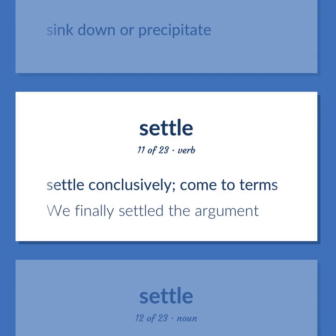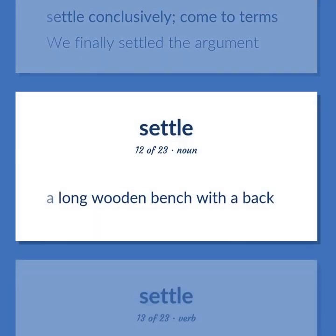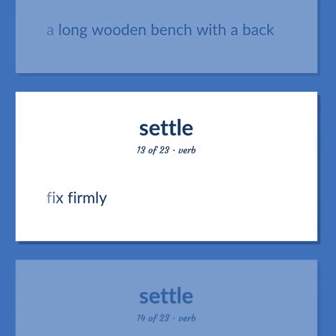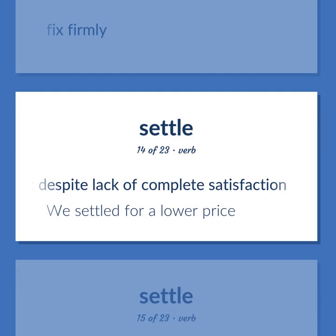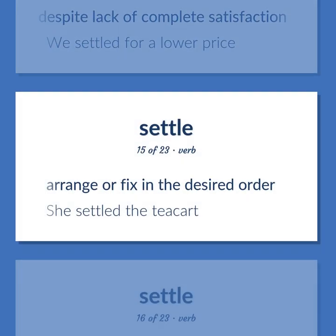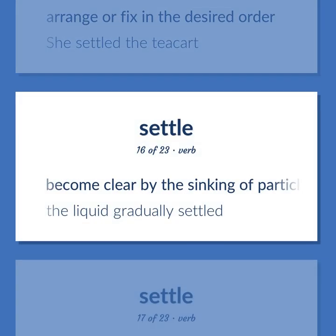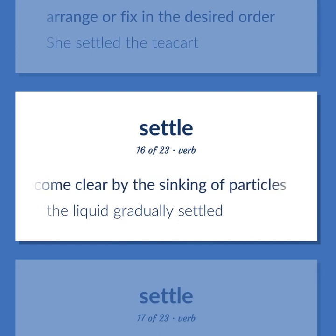Settle: settle conclusively, come to terms — we finally settled the argument. A long wooden bench with a back. Fix firmly. Accept despite lack of complete satisfaction — we settled for a lower price. Arrange or fix in the desired order — she settled the tea cart. Become clear by the sinking of particles — the liquid gradually settled.